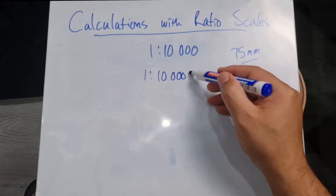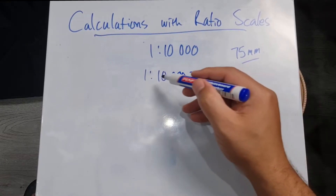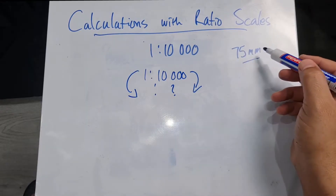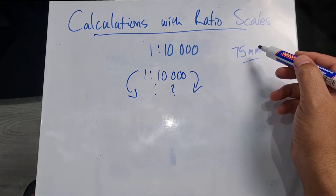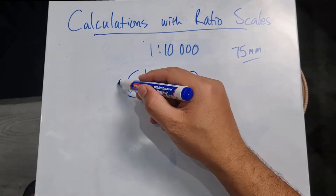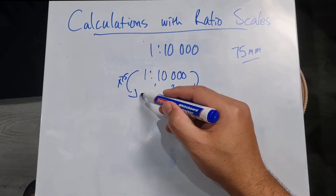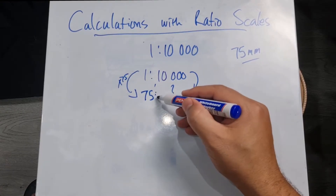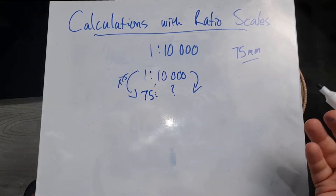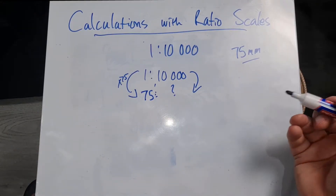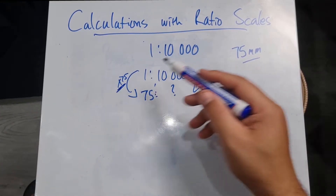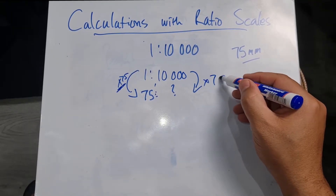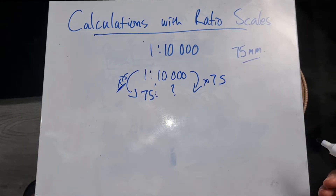One is to 10,000. I don't know the actual distance, and in order for me to get to 75 millimeters I'm going to multiply by 75. So now I'm sitting with 75 is to something unknown. If I've multiplied by 75 on the one side I'm going to have to multiply by 75 on the other side.